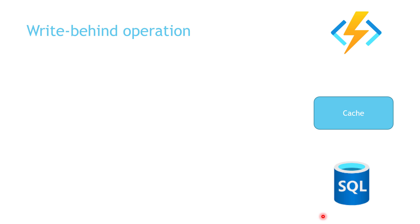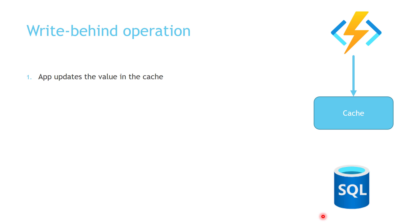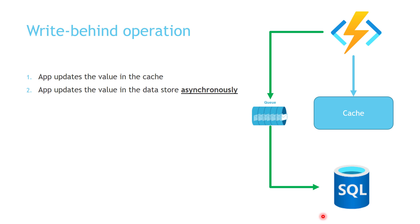For the write-behind operation, the application updates the data in the cache, and then asynchronously updates the data in the data store using something like a message queue. Eventually, these values get updated to the data store every minute, hour, or day based on your business requirements. You can also have the values updated to the data store in near real-time by having an Azure Function triggered with every new message placed in the message queue.